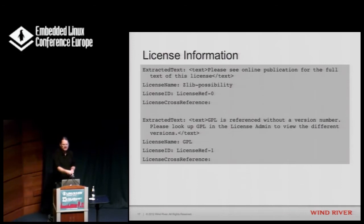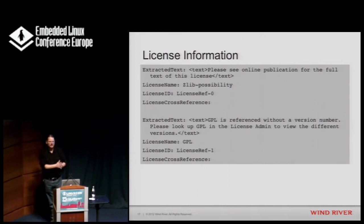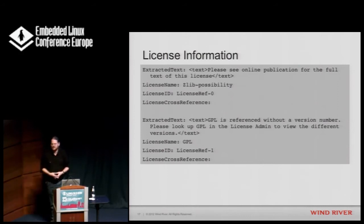Most likely, a GPL reference found in something like Zlib isn't the license of the overall software — it's the license for a file like configure or config.guess. That's when you as an engineer need to work with your legal organization to explain that the thing labeled GPL is never used on the target and is only used for building. That helps them make a determination on whether you need to meet the GPL obligations for that particular package.